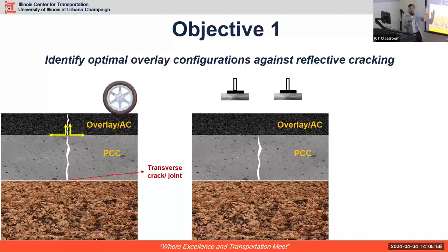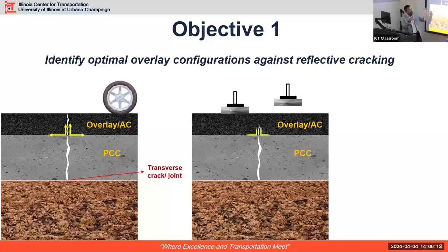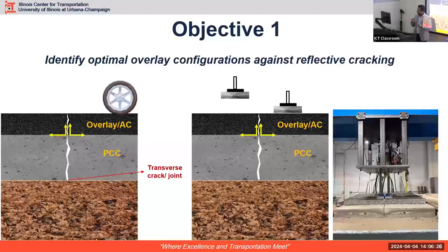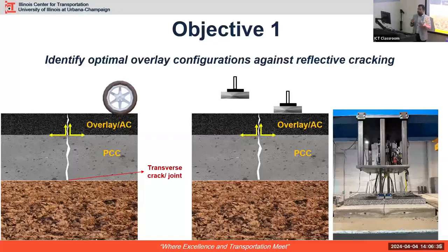We needed to simulate this condition in a large-scale test setup. The movement of the tire is achieved by two load actuators. The actuators apply load such that it simulates the tire moving over the cracked PCC — as the tire approaches, the left actuator is applied; when the tire is on top, both actuators are applied; as it leaves, only the right side actuator is applied. You do this for several thousands of cycles. I want to take a moment to thank the research engineers; it took a lot of time to achieve what you're seeing here.